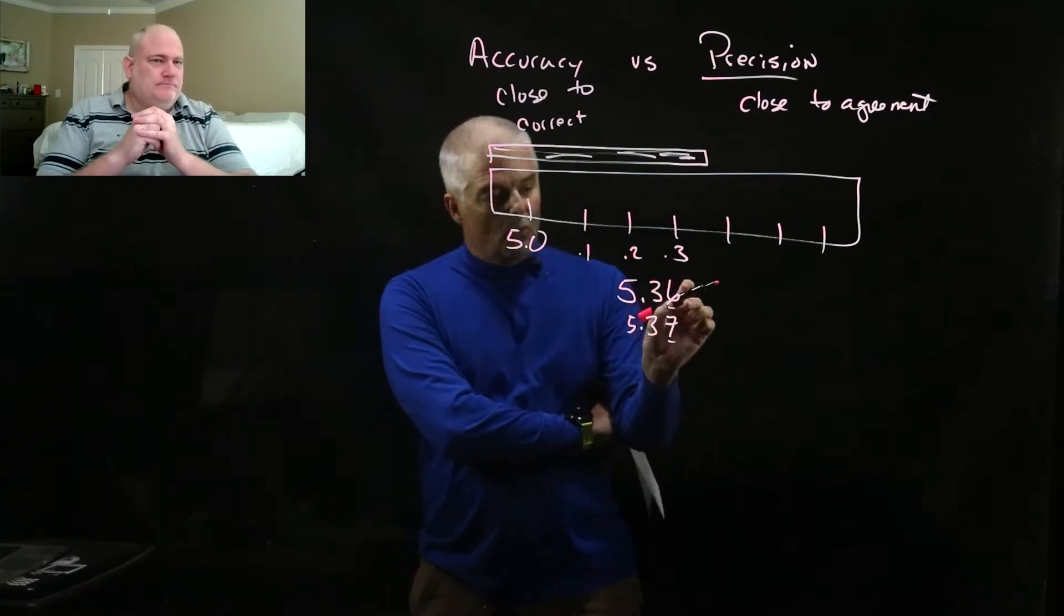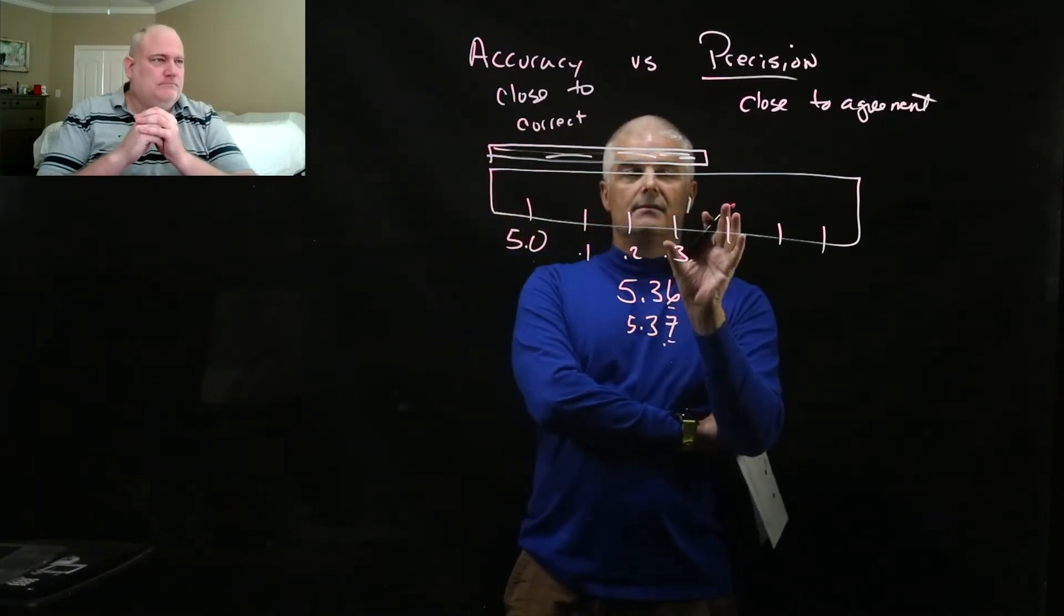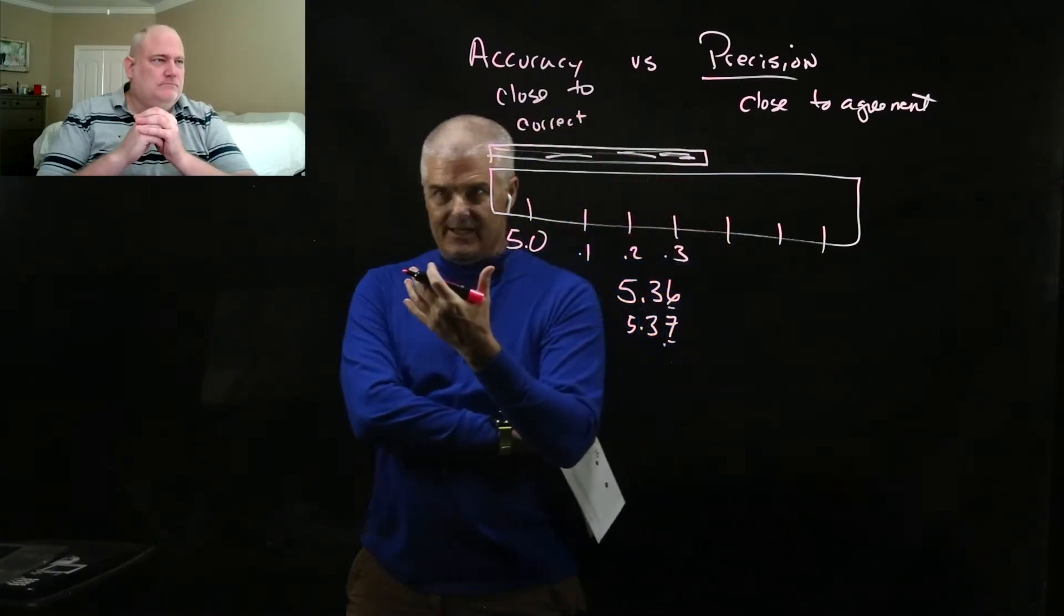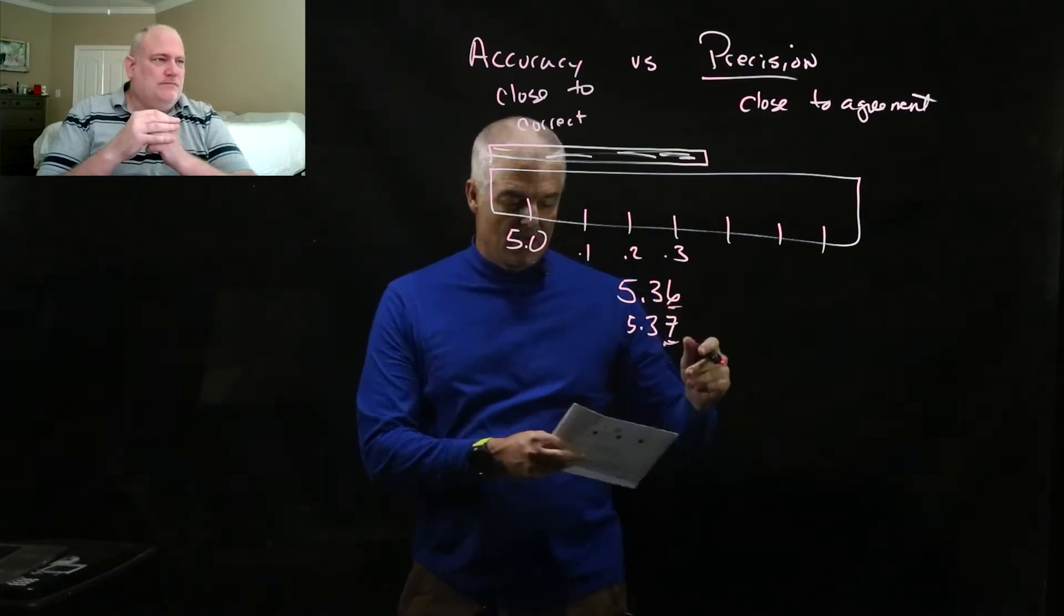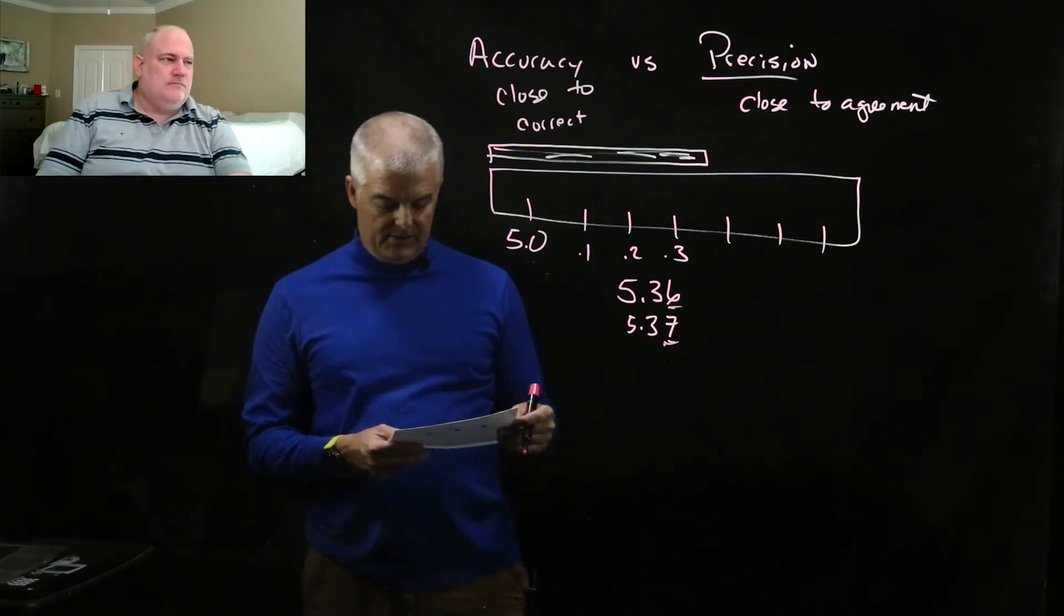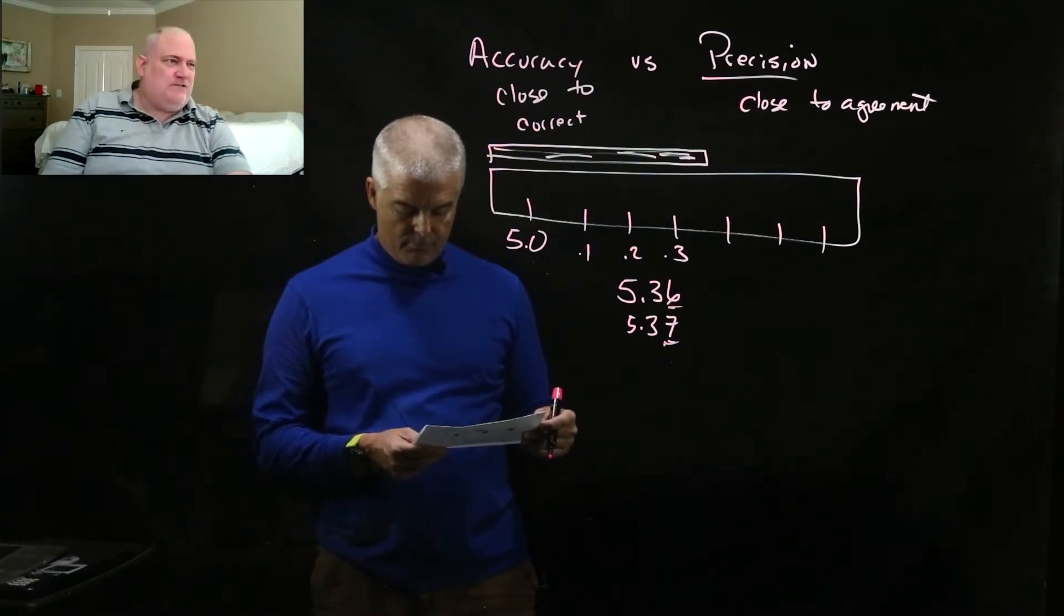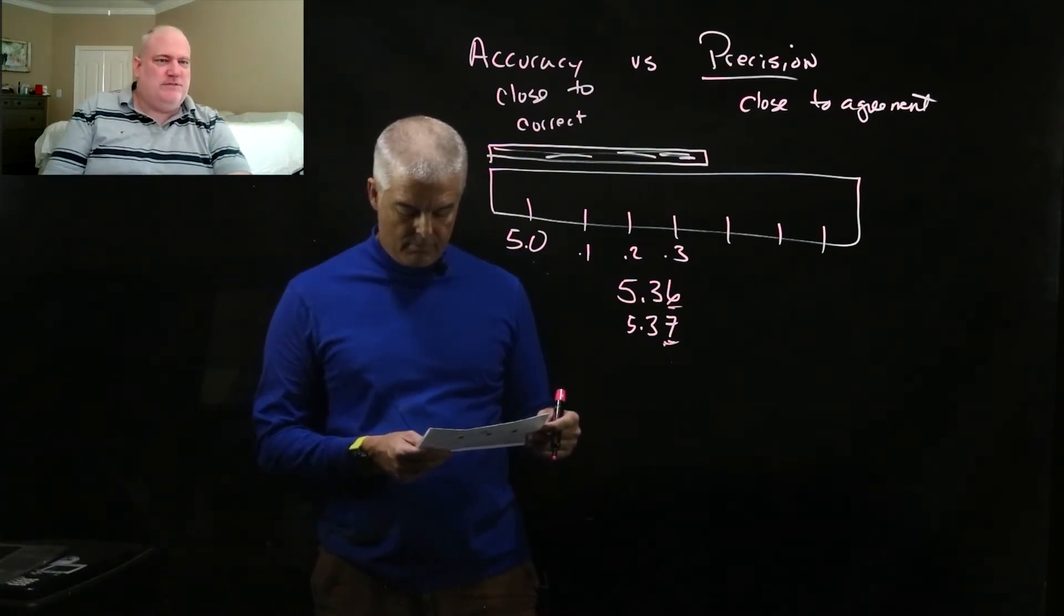And so we always understand whenever we're reading a tool of any kind that that very last number, that's your guess. That's right, all right. So we want to go one level past the measuring of the device if it has that. If it's a digital device, you're not going to have that option. But if it's some kind of an analog device, you can always make that guess on the last digit. And if it's digital, they make the guess for you, so you don't have any option with this.